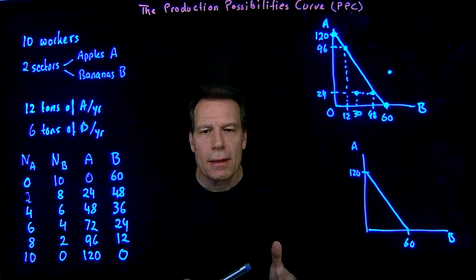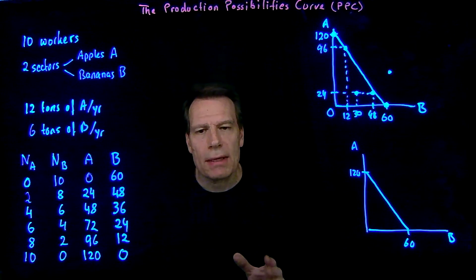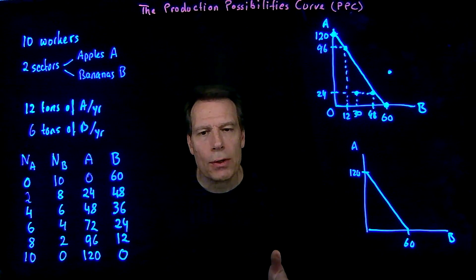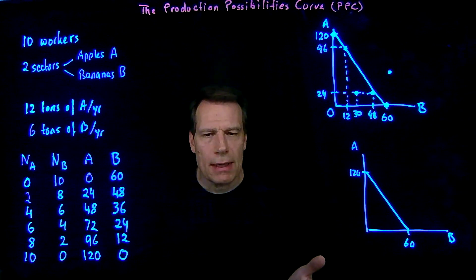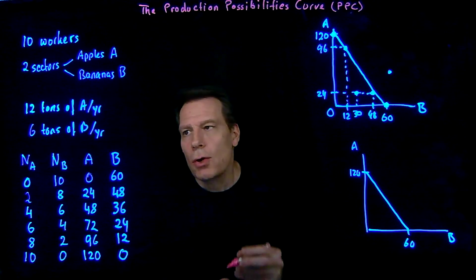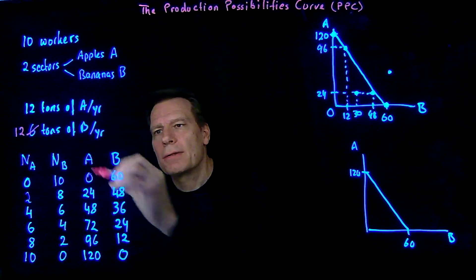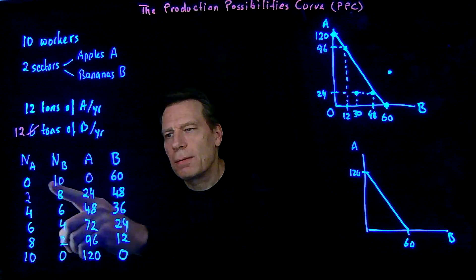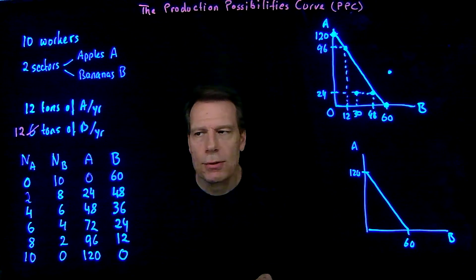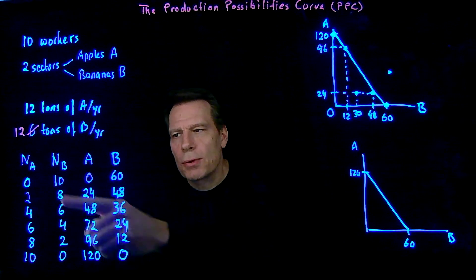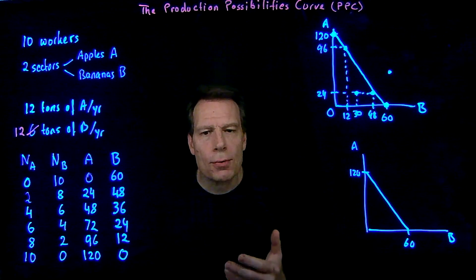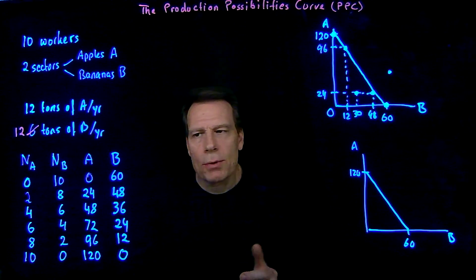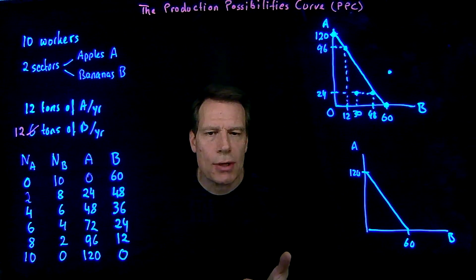But then something happens: there's a technological change that makes workers in the banana sector more productive. Suppose we invented a machine that allowed workers in the banana sector to harvest twice as many bananas per hour as before — they'd be able to harvest 12 tons of bananas per year instead of six. So what would change in the table? Well, the different possibilities for allocating workers across the two sectors wouldn't change. The number of apples produced with a given number of workers also wouldn't change because there's been no technological change in the apple sector.